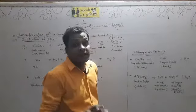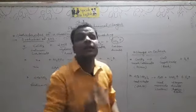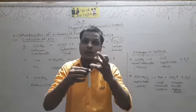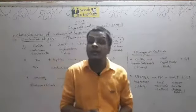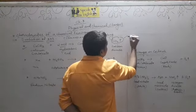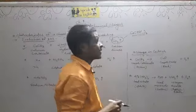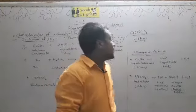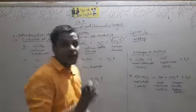अब यह gas evolve तो होती है, लेकिन हम कैसे पता करेंगे? There are two ways. First, हम इस CO2 को एक burning candle के पास से pass कराएं — यदि candle बुझ जाती है, तो हम confirm हो जाएंगे कि CO2 pass हो रही है. Second, यदि हम इसको lime water में pass करा देते हैं, तो यह lime water milky turn हो जाएगा.